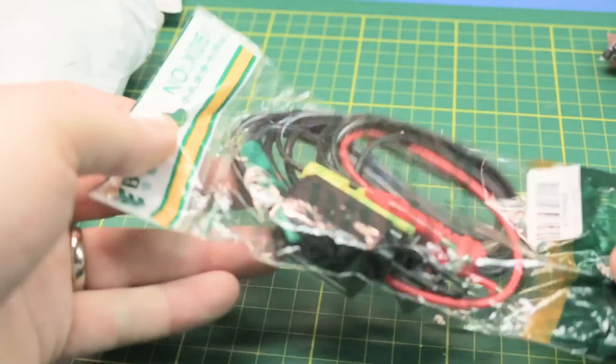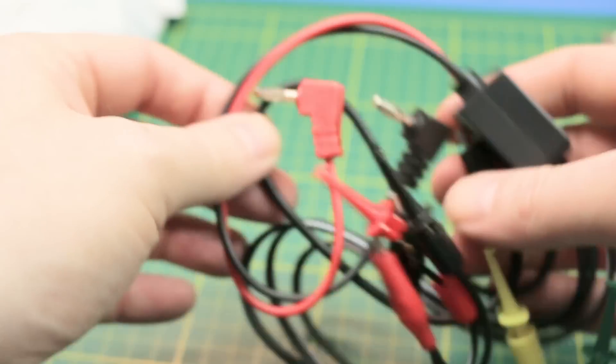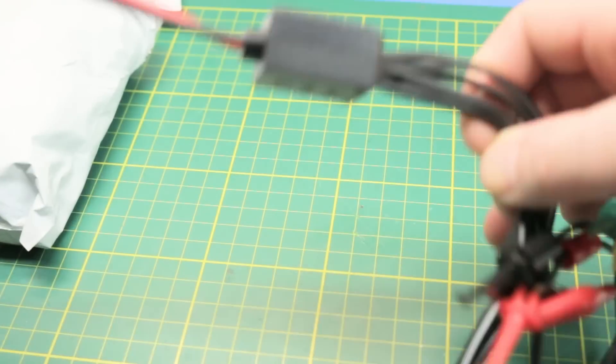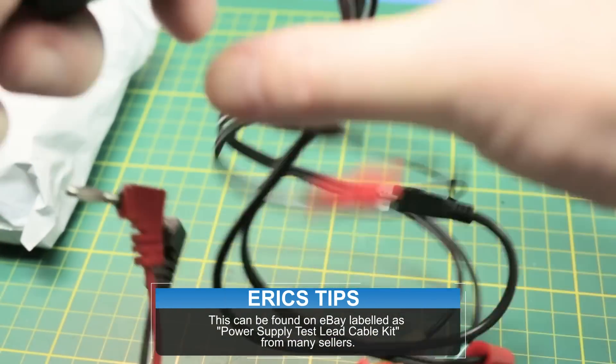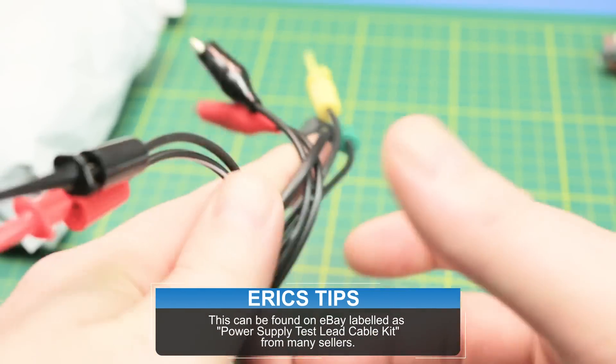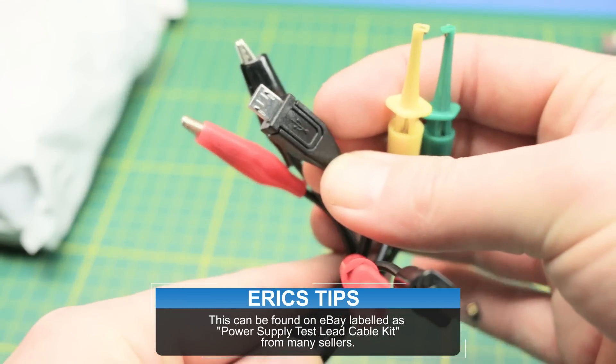In this bag, this is the one I'm possibly most excited about. This is also leads for my power supply, but it's kind of like a one size fits all. Banana jacks to all sorts of different styles. We've got alligator there. We've even got a USB.